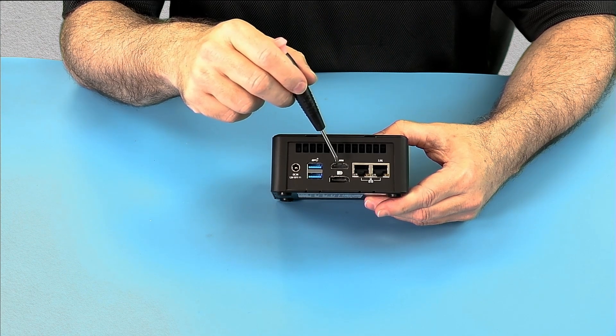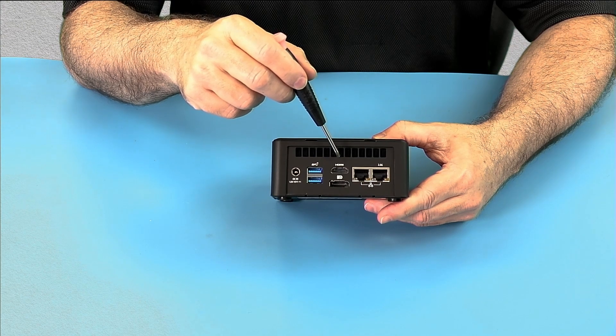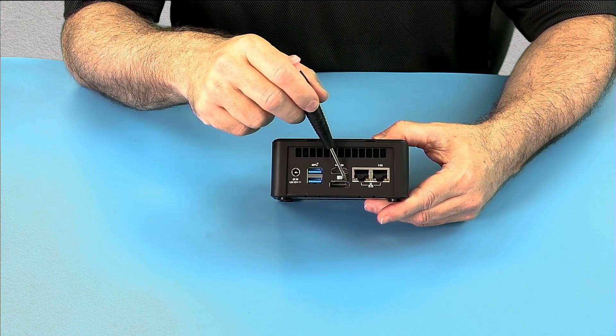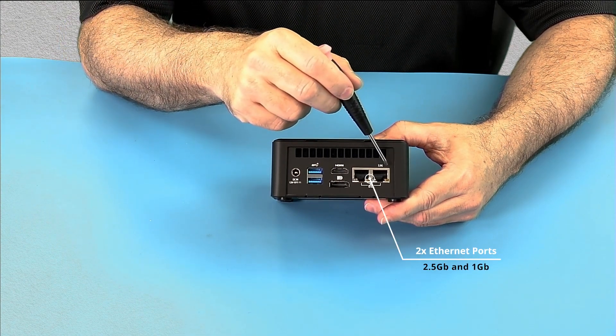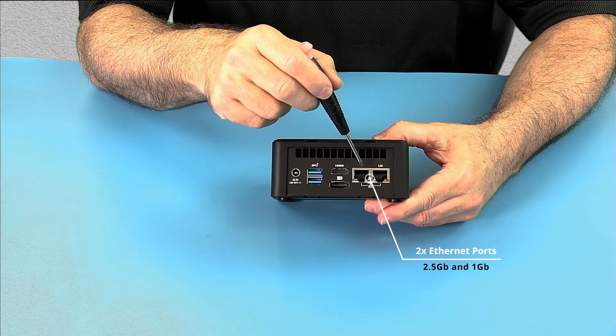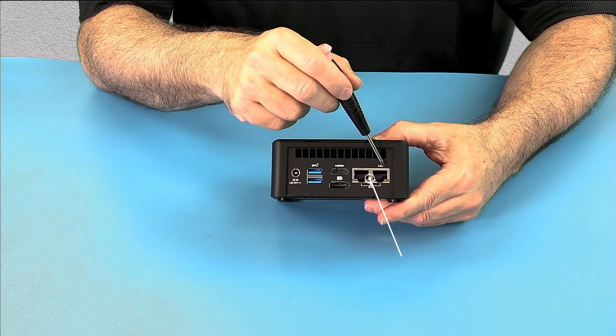So you can daisy chain multiple monitors off of either of the front Type-C ports, or the back display port. We have two Ethernet ports. One is 2.5 gigabit, and the other one's standard gigabit. So this gives you not only two ports, but the new 2.5 gigabit.